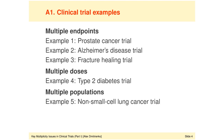Even though all three examples deal with multiple endpoints, we will see that they represent three different types of multiple endpoint problems, because the trial sponsor actually pursues three different goals in those three settings. Then in example four, multiplicity is induced by the comparison of multiple doses versus a common control.